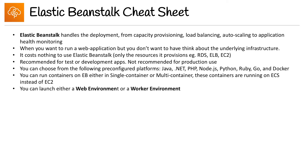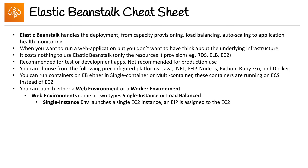You can launch either a web environment or a worker environment. Web environments come in two types: single instance or load balanced. For single instance environments, it launches a single EC2 instance and assigns it an Elastic IP address. For a load balanced environment, it launches EC2 instances behind an ELB managed by an auto scaling group. The single instance environment is also in an auto scaling group, just set to a desired capacity of one.